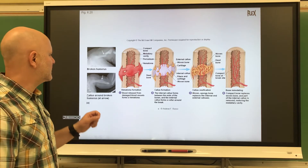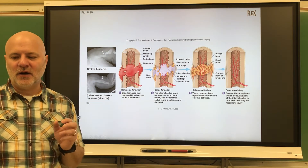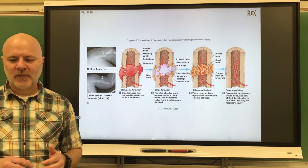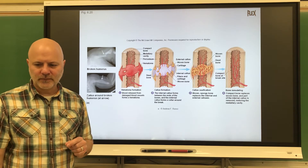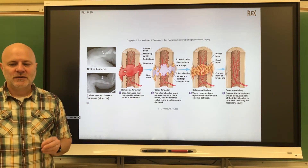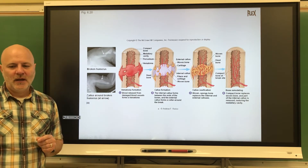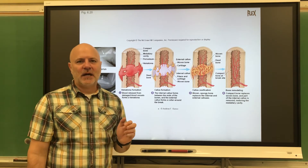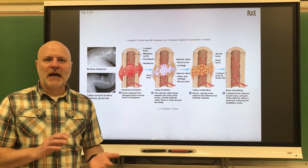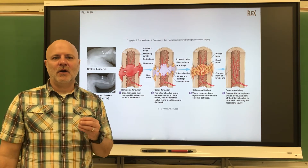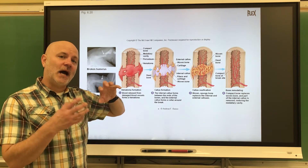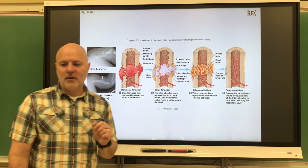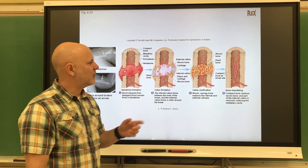If a bone breaks, the repair process begins with hematoma formation — blood escapes from ruptured vessels, forming a massive blood clot, and the area becomes inflamed and swollen. Next is fibrocartilage callus formation: blood vessels grow into the hematoma, phagocytic cells clean the area, and then fibroblasts and chondrocytes invade. Fibroblasts produce collagen fibers while chondrocytes convert the region into fibrocartilage.